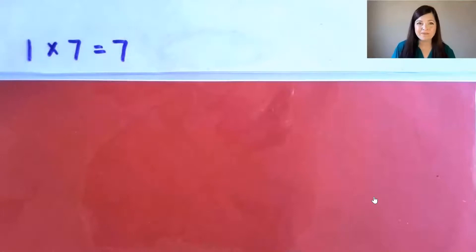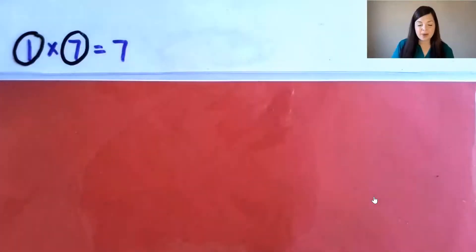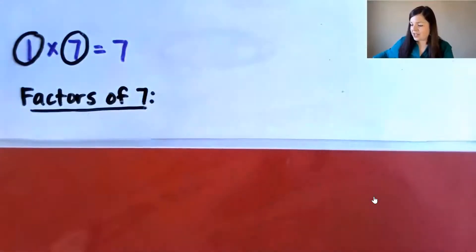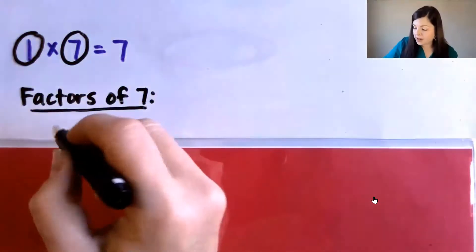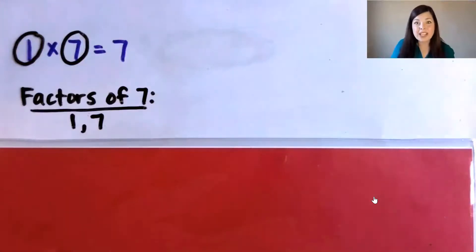Let's try another one. Read the equation: 1 times 7 equals 7. The product is 7, and the factors are 1 and 7. Pause the video and see if you can find another factor pair with a product of 7. If we list the factors we have so far, 1 and 7, and think about the numbers in between — 2, 3, 4, 5, and 6 — none of those numbers are factors of 7. So 1 and 7 are the only factors of 7.